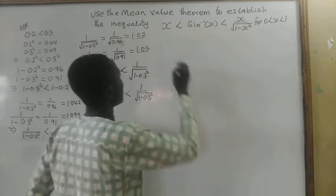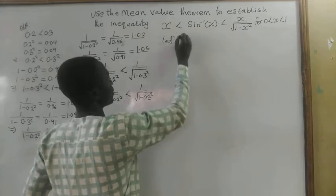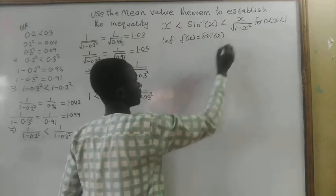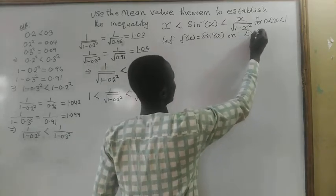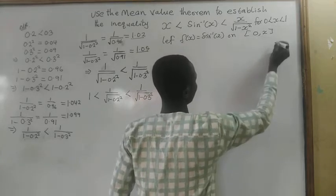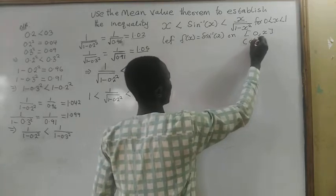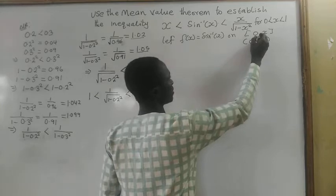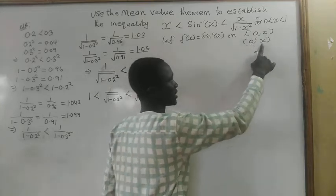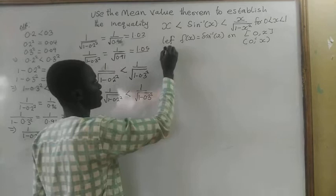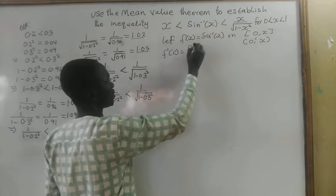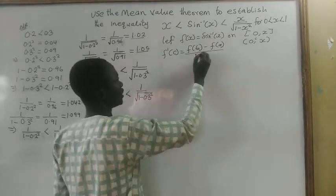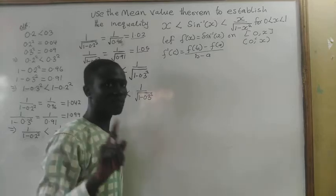Let's say that we have f of x equal to sin inverse of x, being continuous on the closed interval 0 to x, and differentiable on the open interval 0 to x. Then there will exist a number c between 0 and x so that f prime of c is equal to f of b minus f of a, all divided by b minus a. That is the mean value theorem.